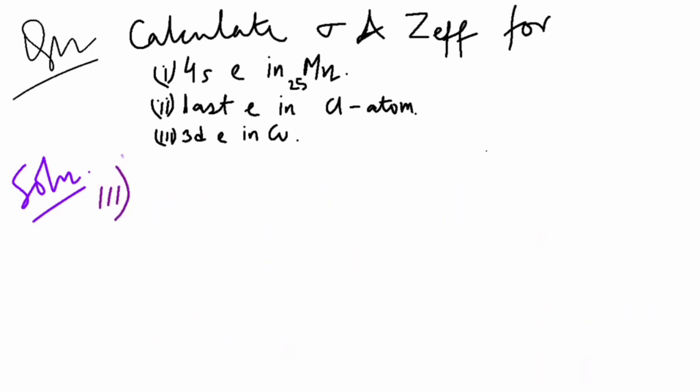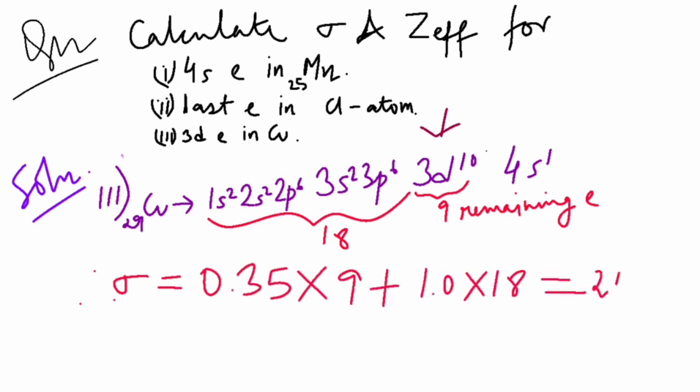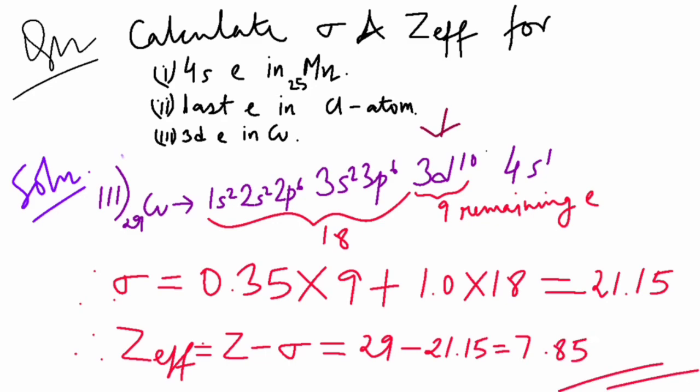Next we solve the third question. The electronic configuration of copper is 1s², 2s², 2p⁶, 3s², 3p⁶, 3d¹⁰ and 4s¹. Since we are considering 3d¹⁰, the number of remaining electrons is 9 in 3d¹⁰ and rest 18. So sigma is 0.35 × 9 and 1 × 18 and we get the resultant value 21.15 and Z_effective we get Z minus sigma. Z is 29 minus 21.15 equal to 7.85. This was for d.